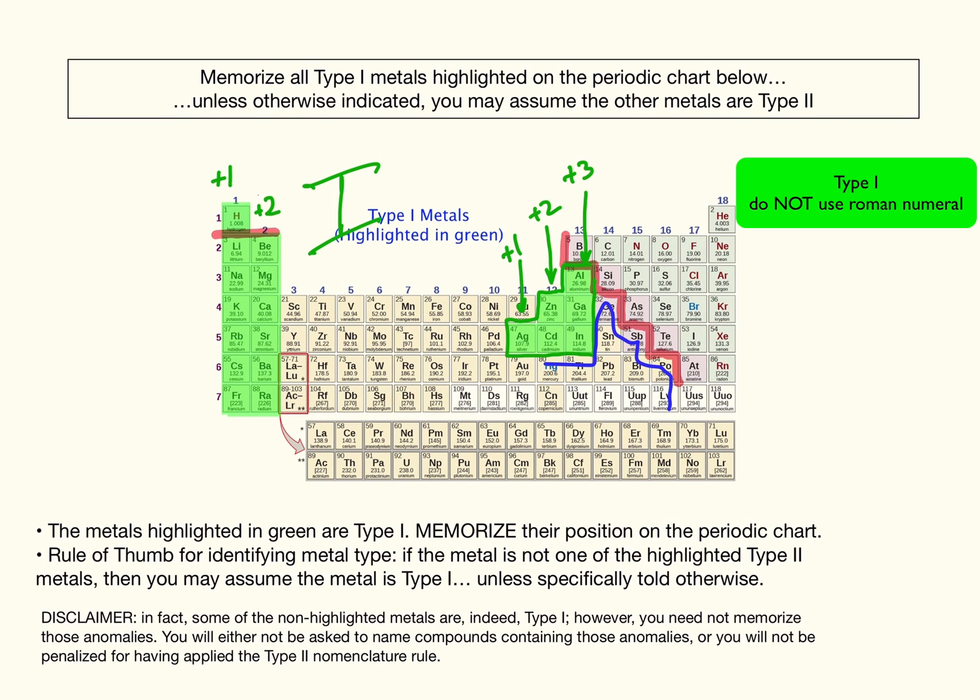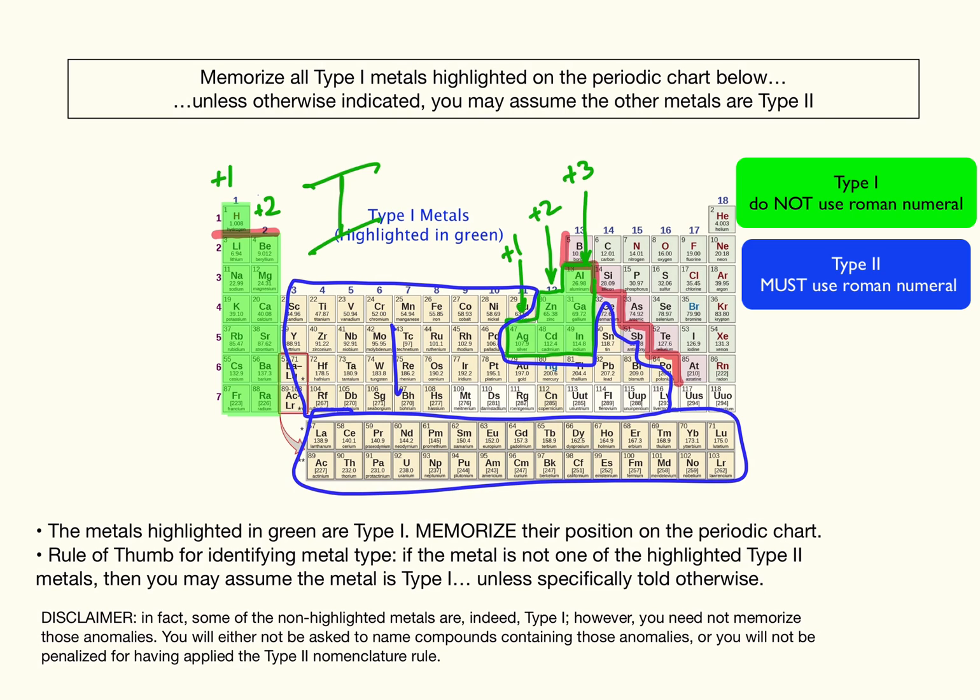And any metal that is outside that green, you may assume it's a Type 2 metal for nomenclature purposes.